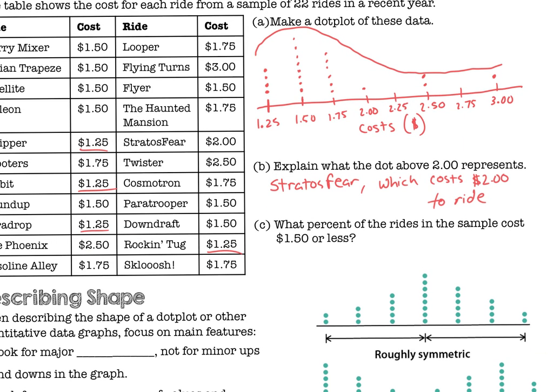Now what percent of the rides in the sample cost $1.50 or less? We need to figure out how many dots we have that are $1.50 or less. Well, $1.50 had eight, $1.25 had four. So that's 12 out of the 22 rides. Percentage-wise, that's .545, which is 54.5%. So 54.5% of the rides were $1.50 or less.